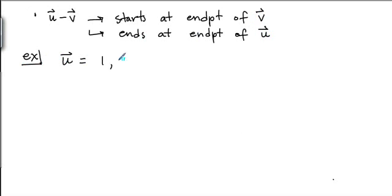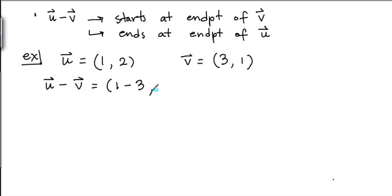If u is (1, 2), so what we had before, v is (3, 1), then u minus v, so I always calculate them first rather than draw them, is 1 minus 3 and 2 minus 1. So that's going to be negative 2 and 1.